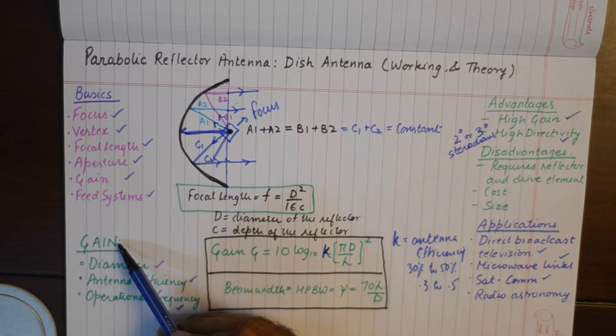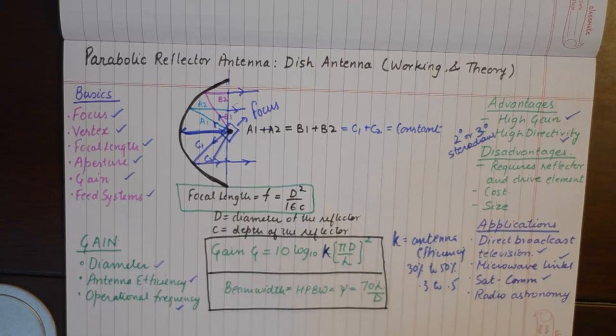The gain is directly proportional to diameter, antenna efficiency, and frequency. It is inversely proportional to lambda. If you want to express this in terms of frequency, it becomes F² divided by C².